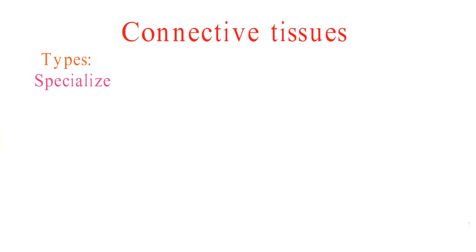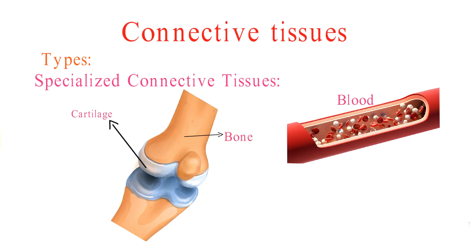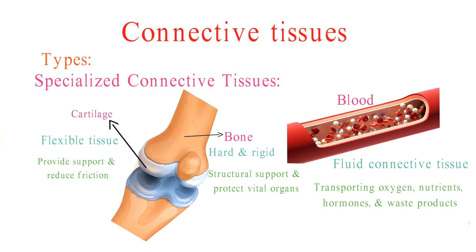Next, we have specialized connective tissues, which include cartilage, bone, and blood. Cartilage is a firm, flexible tissue found in various parts of the body, providing support and reducing friction in joints. Bone tissue is hard and rigid, offering structural support and protecting vital organs. Blood, our fluid connective tissue, plays a crucial role in transporting oxygen, nutrients, hormones, and waste products throughout our bodies.